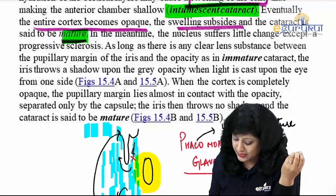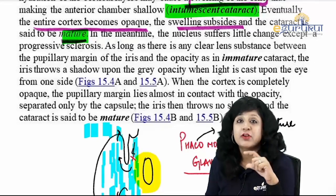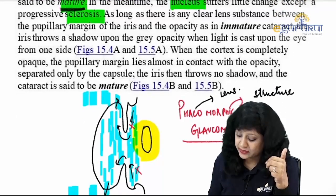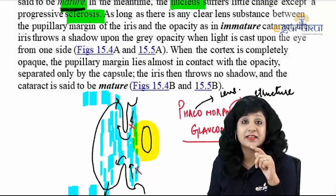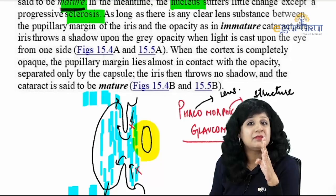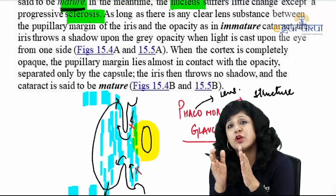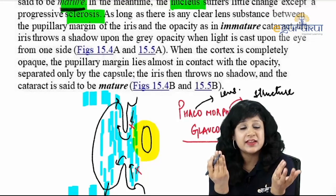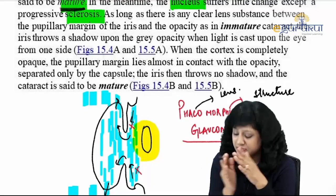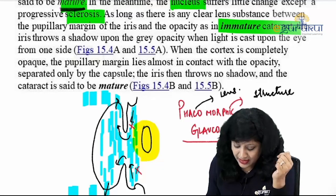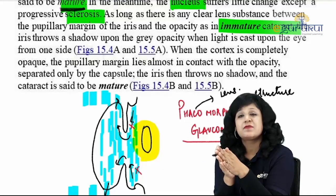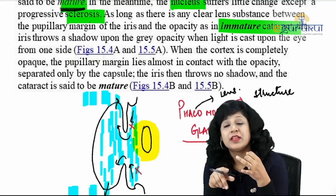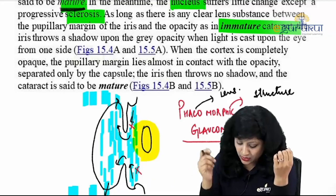Side by side, the nucleus is also undergoing nuclear sclerosis. As long as there is any clear lens substance between the pupillary margin of the iris and the opacity, there will be an iris shadow — this is called immature cataract. The moment there is no clear cortex remaining, there will be no shadow and the cataract becomes mature. Stages: lamellar separation, incipient cataract, immature cataract, then mature cataract.